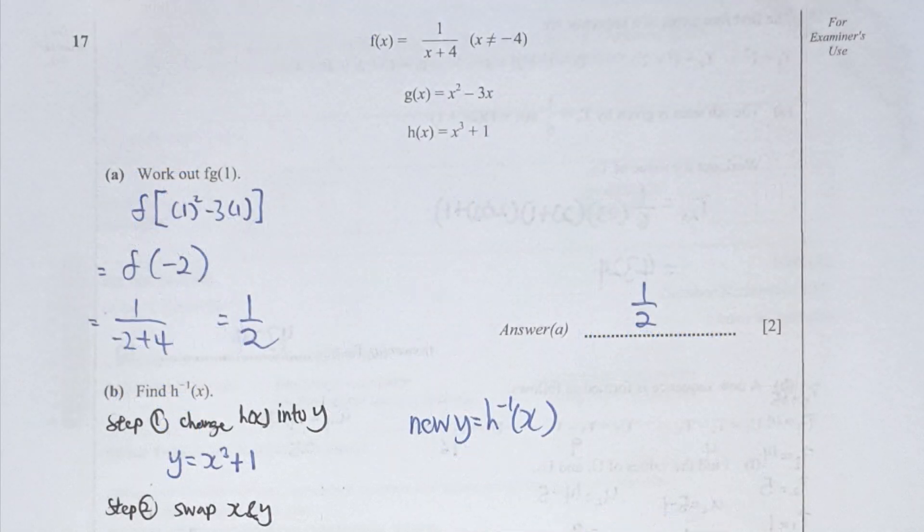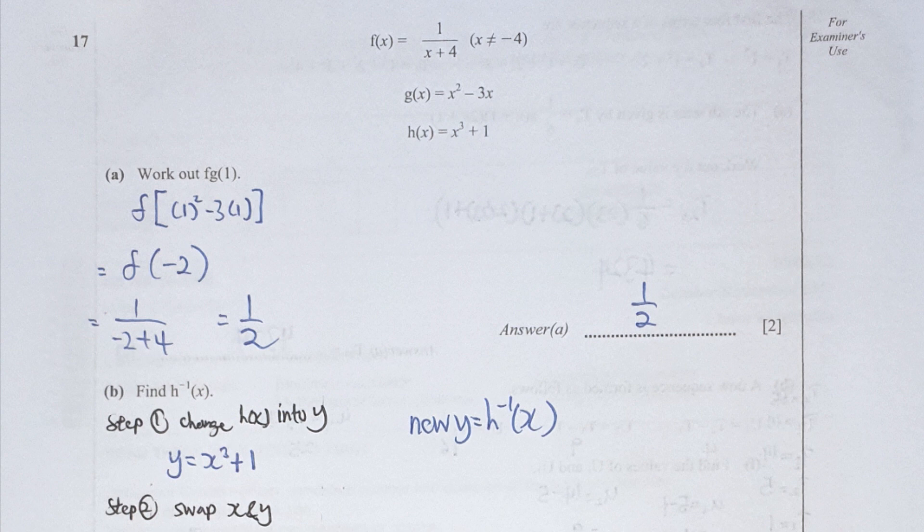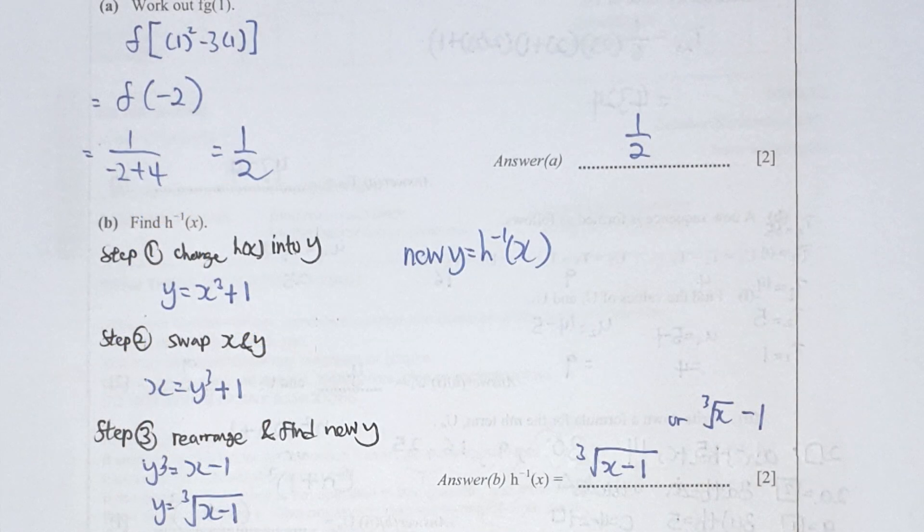Question 17. So I first identify g's function when your x is 1. So when your x is 1 in g function, it should get negative 2. You should get negative 2 as the results. Then substitute this negative 2 into f function again. You should get your results as 1 over negative 2 plus 4, which is 1 over 2. In question b, finding the inverse of h function. So first thing I did was h function change into y. Swap the x and y's position and rearrange to find the new y. So new y here will actually be cube root of x minus 1.